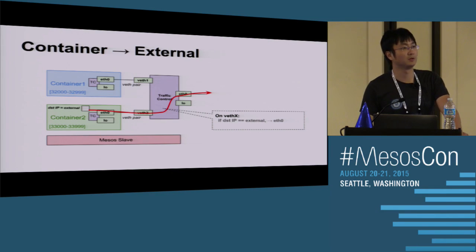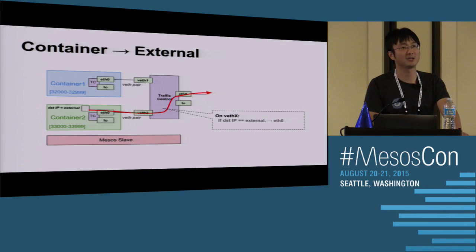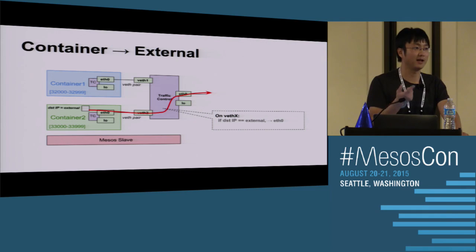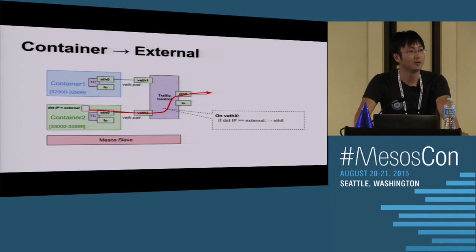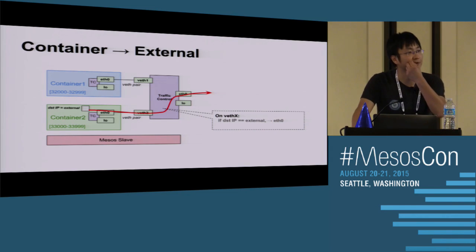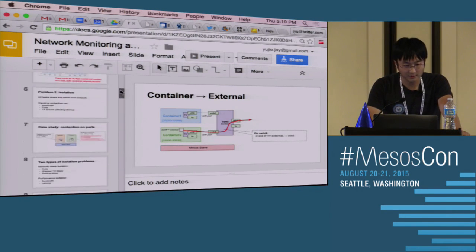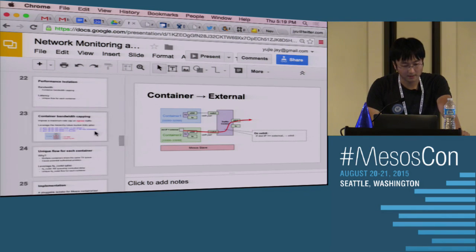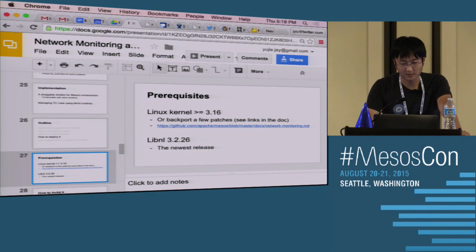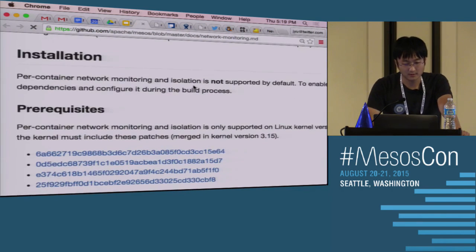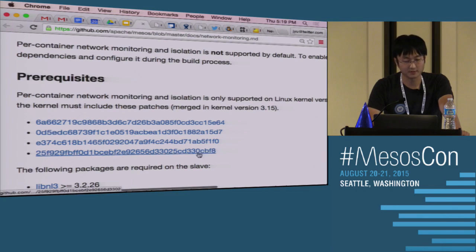Question about kernel modules/patches required: there's a list in the user documentation with a link to specific patches. For example, one patch is in Linux 3.15 - before 3.15 you cannot set the MAC address of a loopback device. You need to get those patches into the Linux kernel you're running. There are four patches total; the latest is in 3.15, so if you're using 3.16 or newer it should be fine.